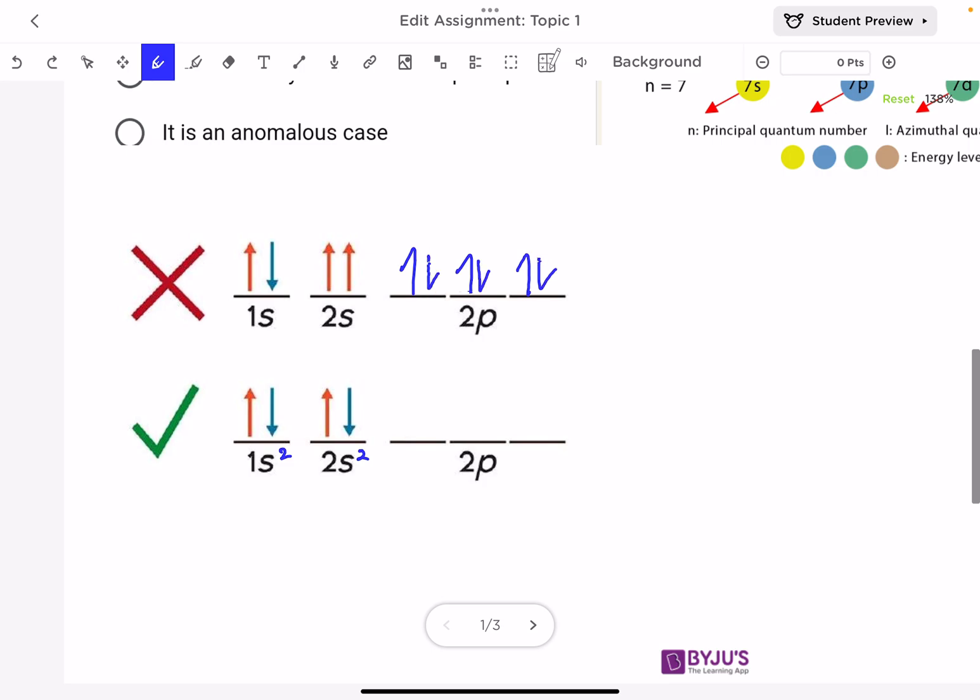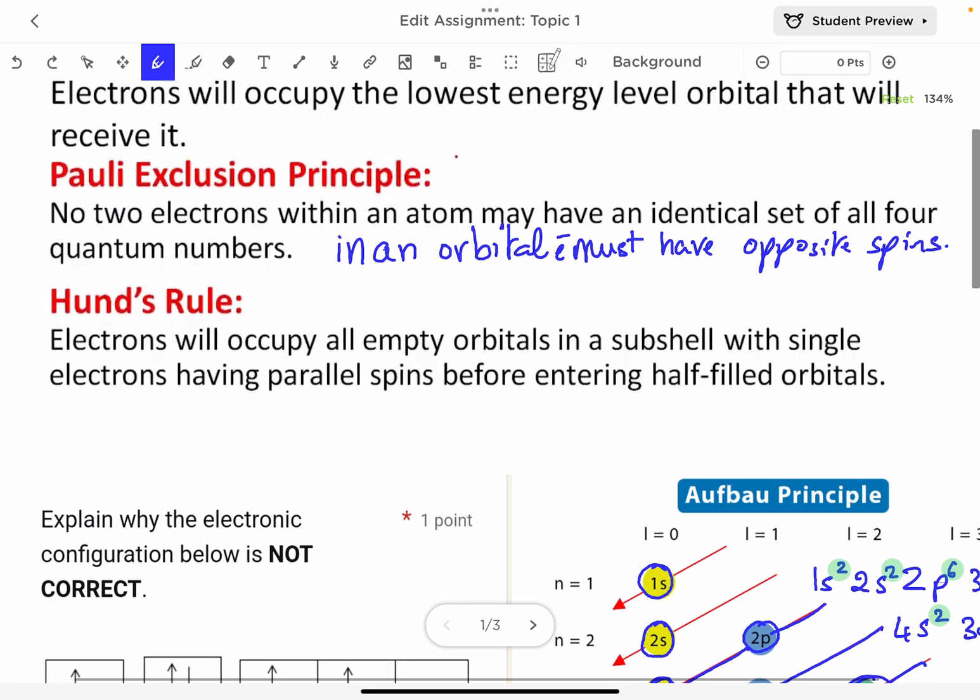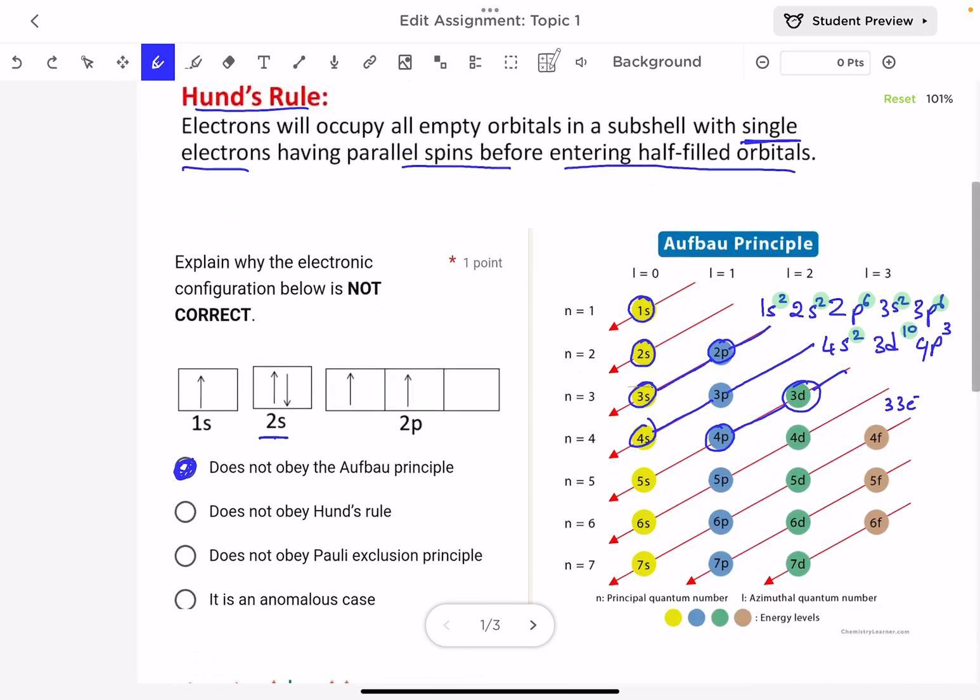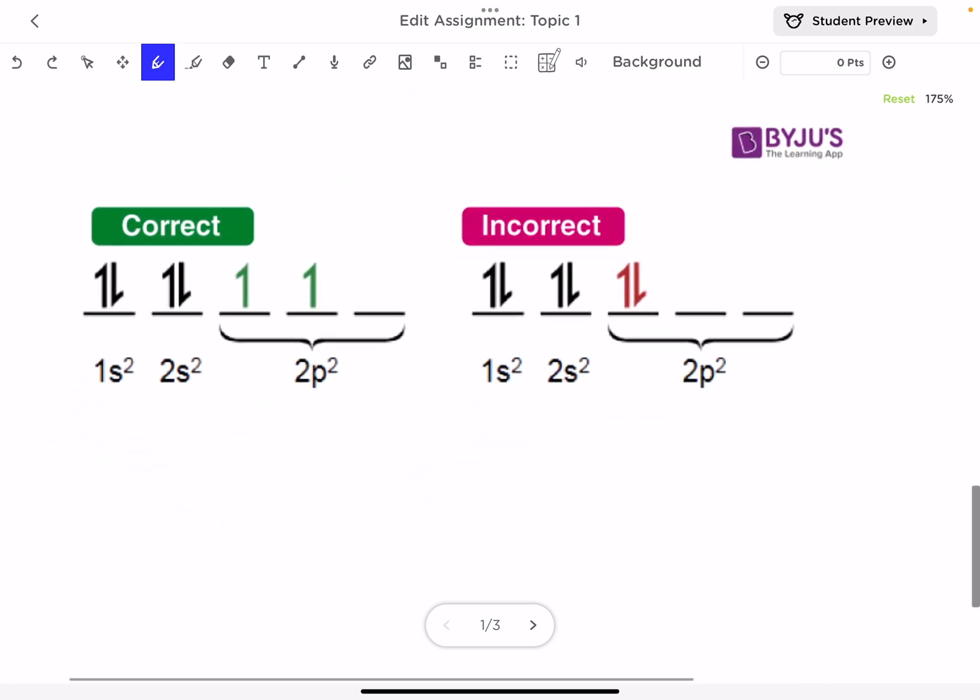And the third rule is Hund's rule. It says that electrons will occupy all empty orbitals in a subshell with single electrons having parallel spins before entering filled orbitals. So you must fill the electrons singly, and then you start pairing them.